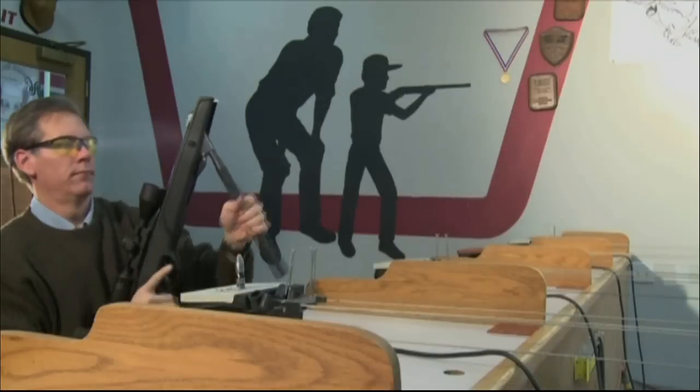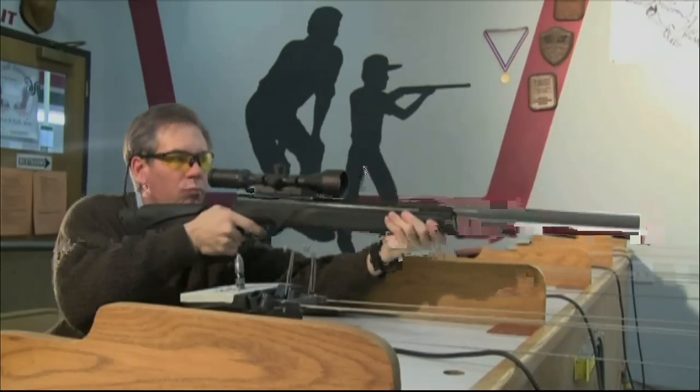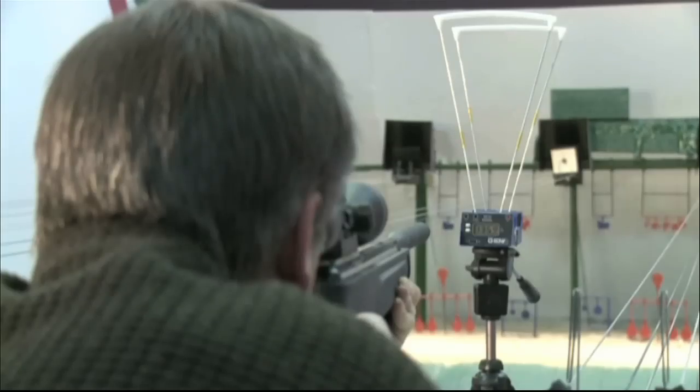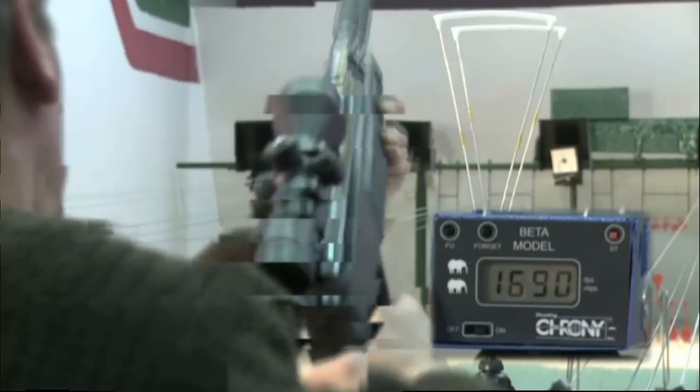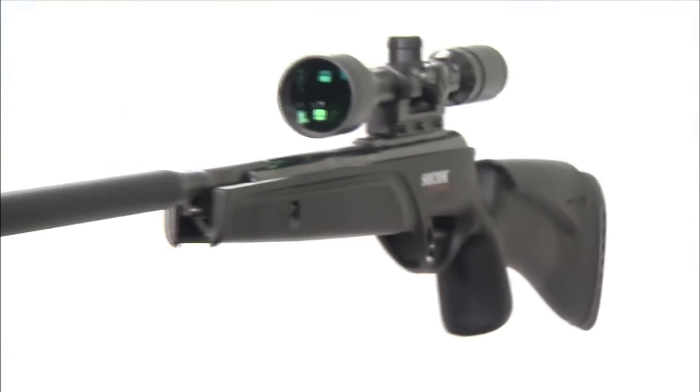The GAMO SOCOM EXTREME air rifle shoots 17 caliber PBA pellets at an incredible 1650 feet per second for bone breaking terminal velocity that is unheard of with other brands.